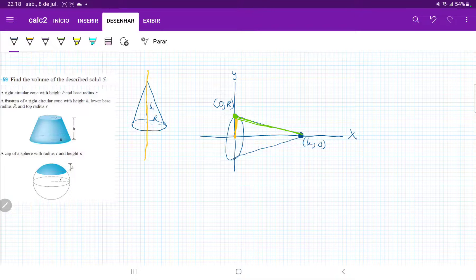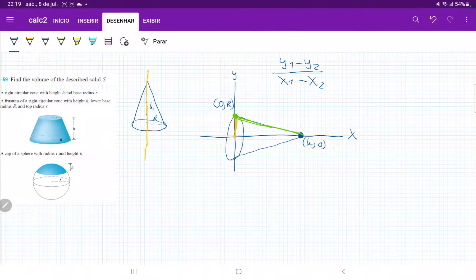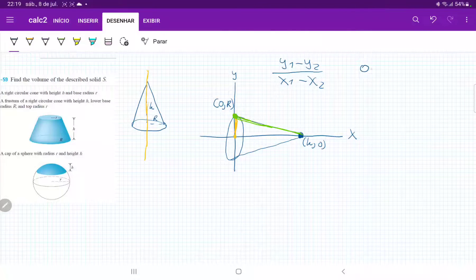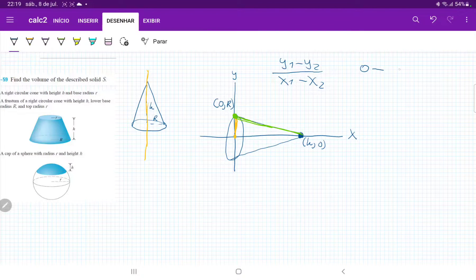we're just going to use our y1 minus y2 over x1 minus x2. So I'm going to use this as 0.1. So y1 is equal to 0 minus y2, which is r,